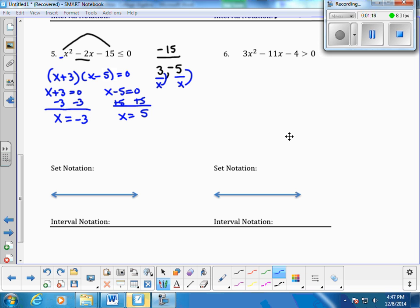Set notation isn't as big a deal right now. We're not going to worry about that, but I'm going to take my critical values and put them on a number line. Now, I need to find out when this is true, when my original statement up here is true.